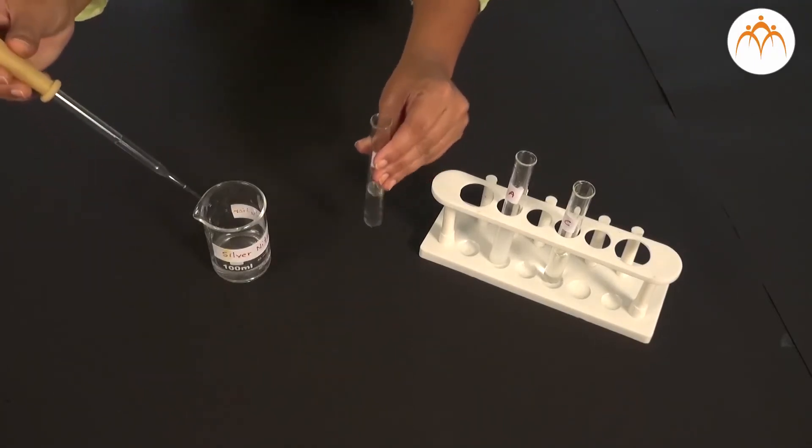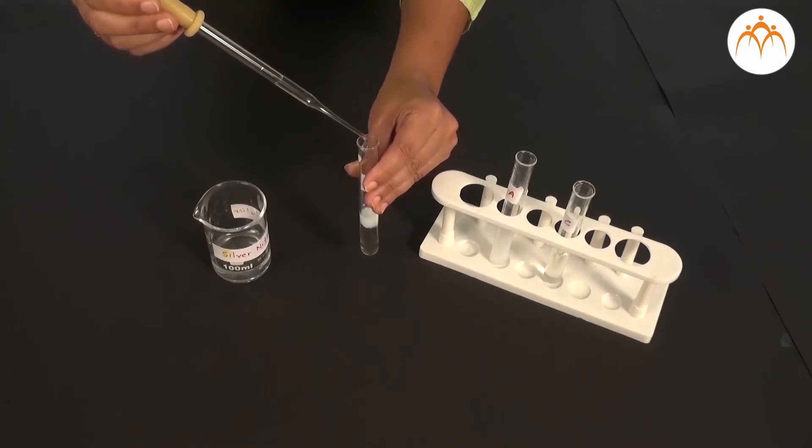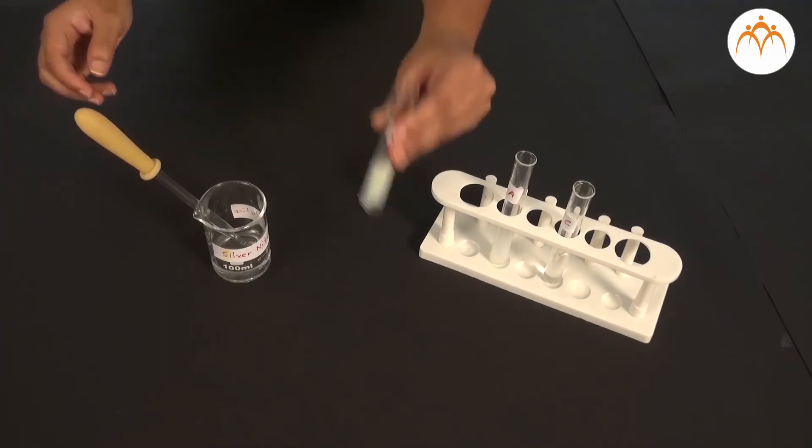In all three test tubes you will find precipitates. It means that when silver nitrate reacts with these three compounds or solutions, precipitate is formed.